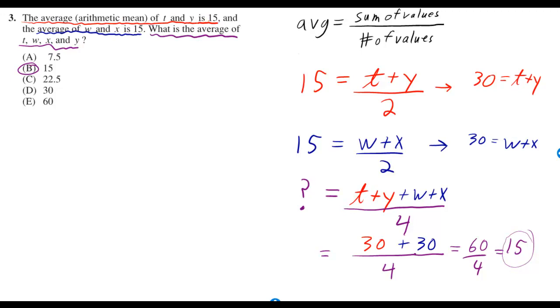In the part of the problem that I underlined in red, our values are T and Y. We don't know what they are, but we have to add them up and divide by the number of values. Well, there's 2, so T plus Y over 2, and they told us what the average is coming out to. They told us it's 15, so I put 15 is equal to T plus Y over 2.